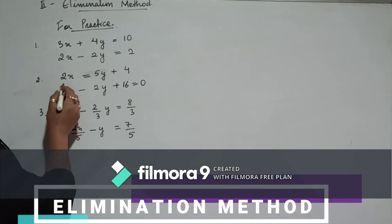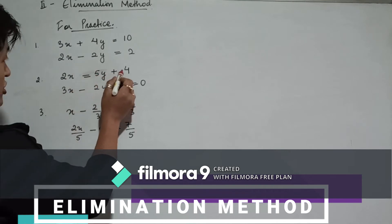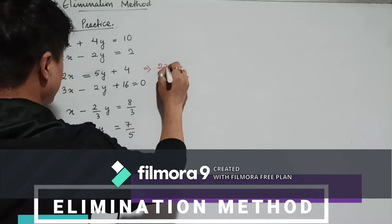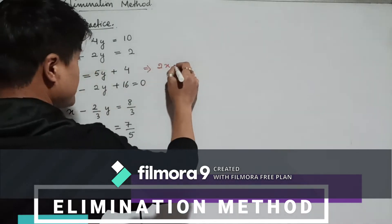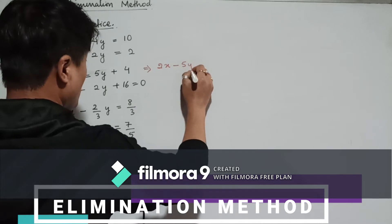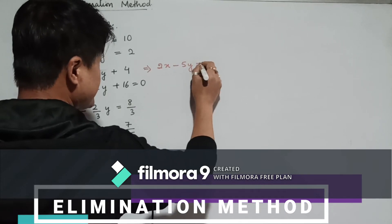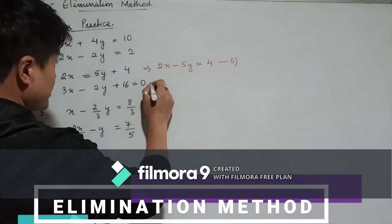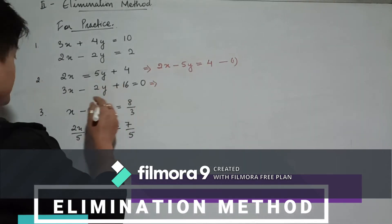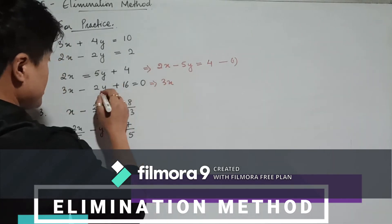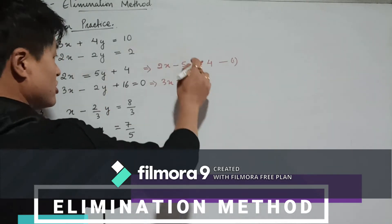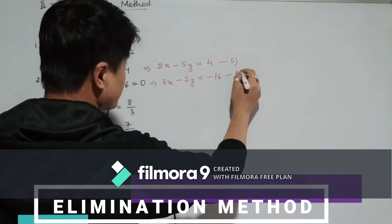For the second practice sum, 2x equals 5y plus 4 — first you have to convert this into standard form. The y will go to the other side, becoming 2x minus 5y equals 4 as equation 1. Similarly, 3x minus 2y equals — this will go to the other side — minus 16, which becomes equation 2.